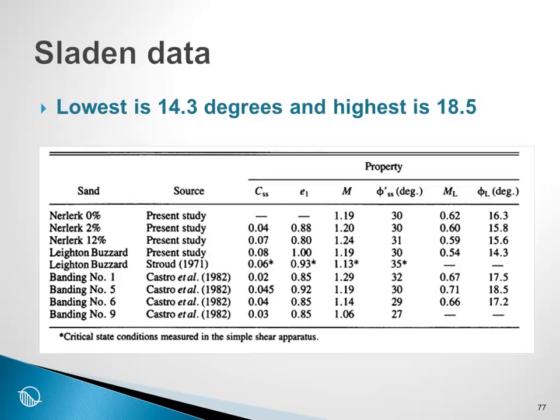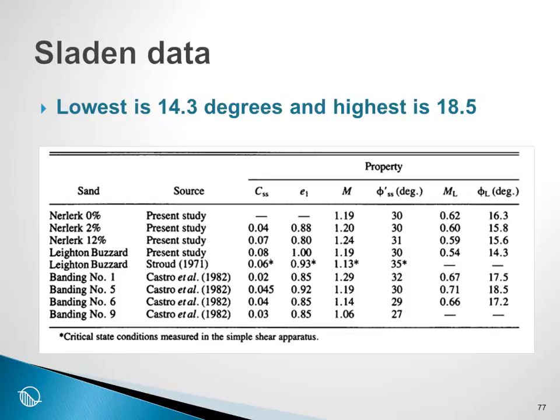Here is some more data which I have referred to as the Sladen data. It is described in that white paper in the folder Papers of Interest. The significance of this data is that the inclination of the collapsed surface is somewhere in the range of 14.3 to 18.5 degrees. So now we are beginning to get a handle on the magnitude of the inclination of the collapsed surface.